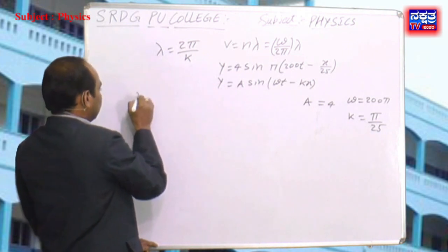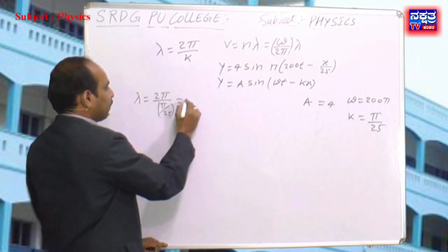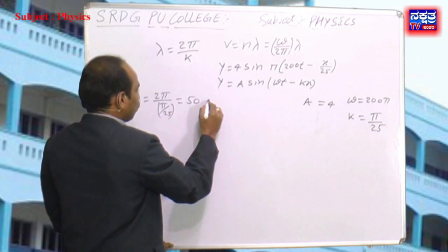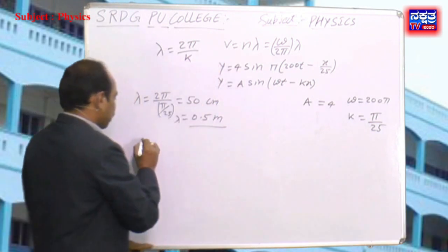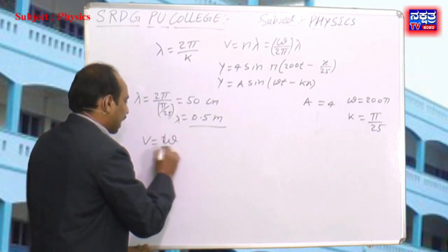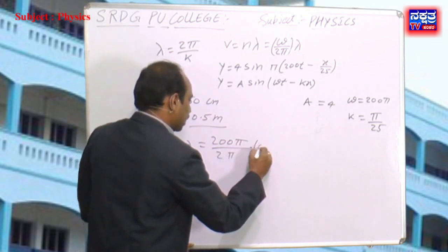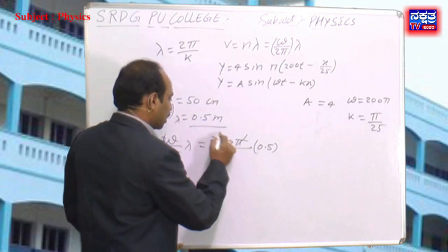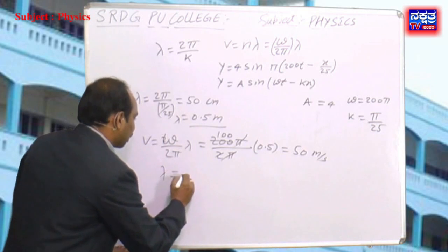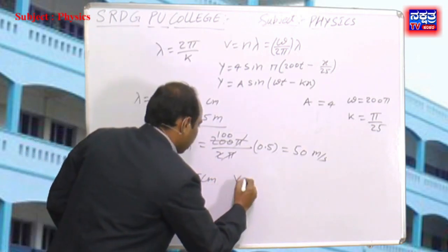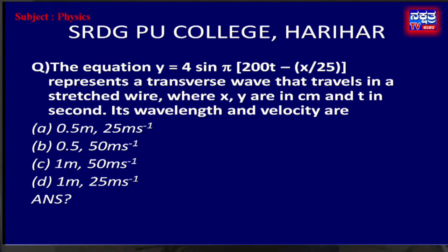Now substituting: λ = 2π/k = 2π/(π/25) = 50 cm = 0.5 meters. Velocity v = (ω/2π)·λ = (200π/2π) × 0.5 = 100 × 0.5 = 50 m/s. So λ = 0.5 m and velocity = 50 m/s. Option b is the correct answer.